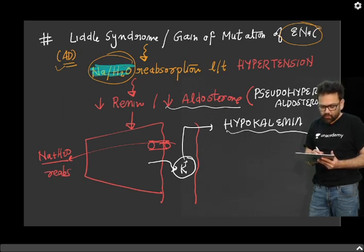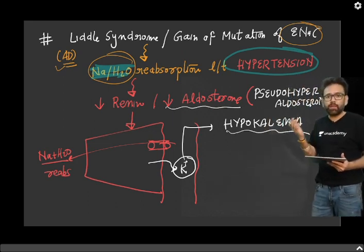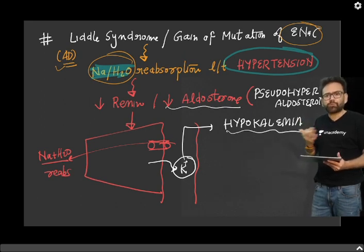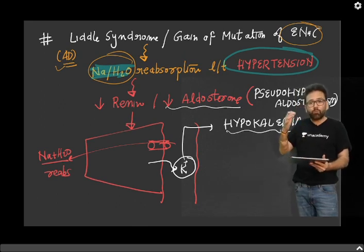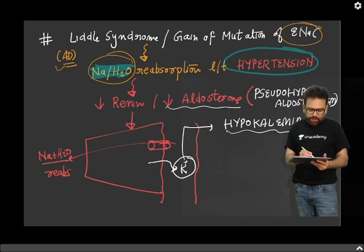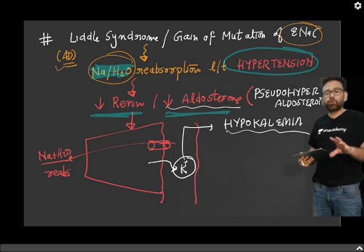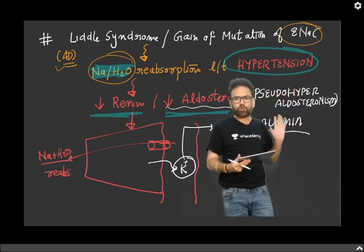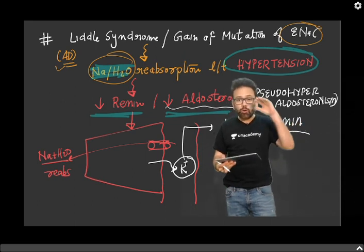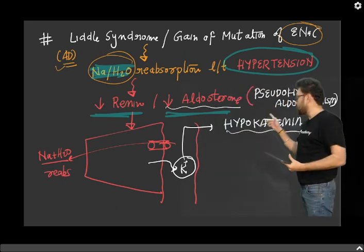Due to sodium and water reabsorption, what do you expect? There will be hypertension. Of course, when there is more reabsorption of sodium, there will be hypertension. And when there is more sodium reabsorption, the RAS will be suppressed — renin will decrease and aldosterone will decrease. So Liddle syndrome is having a similar function as if you are having more aldosterone, but aldosterone is actually low. That is why we call it pseudo-hyperaldosteronism.